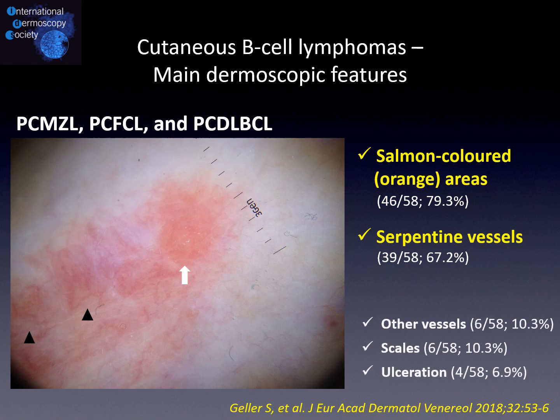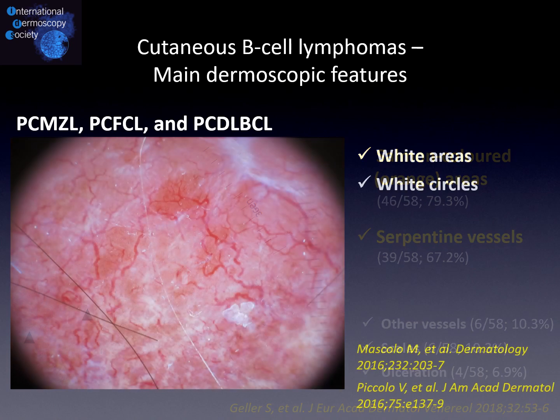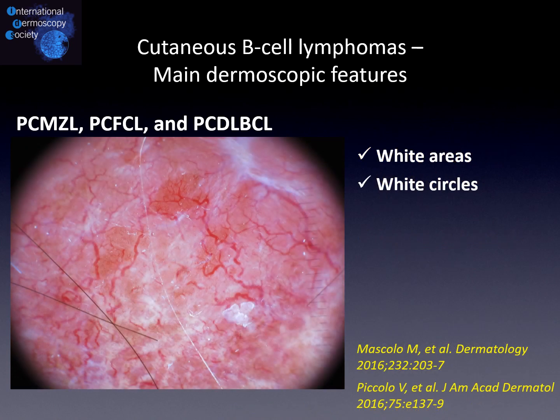Additionally, we may have less common and less specific features including other vessels, scales, and ulceration. Interestingly, two recent case series have highlighted that cutaneous B cell lymphomas may display further peculiar dermoscopic findings, including white areas and white circles, which correspond to the presence of dermal fibrosis.